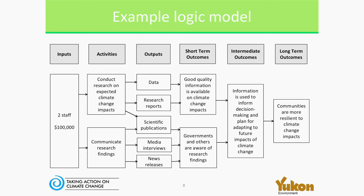They're doing this because they want to produce good quality information about climate change impacts, and because they want people to be aware of this information so that they can use it. They assume that if they can do those two things, people will use that information in their decision making and planning for the future, so that hopefully communities will be better able to adapt to climate change and be more resilient to its impacts. The arrows connect all of the different boxes between inputs, activities, and outputs to show how everything flows toward the outcomes the program is hoping to achieve.